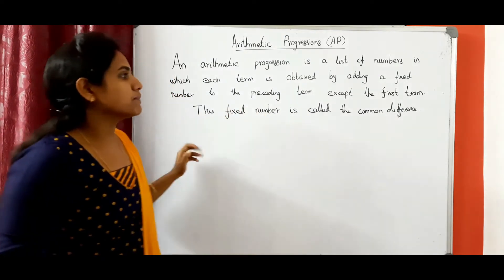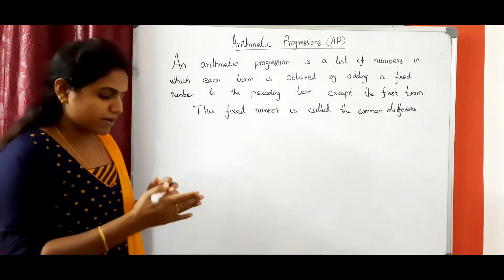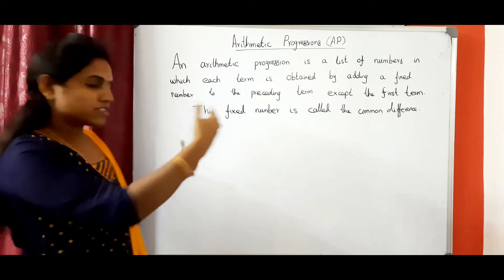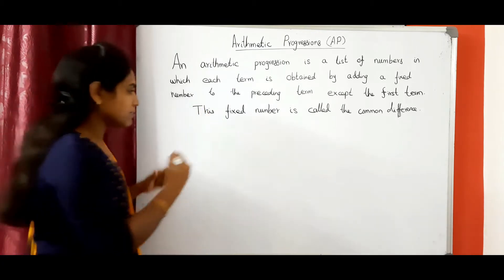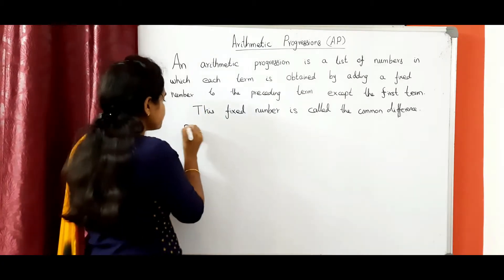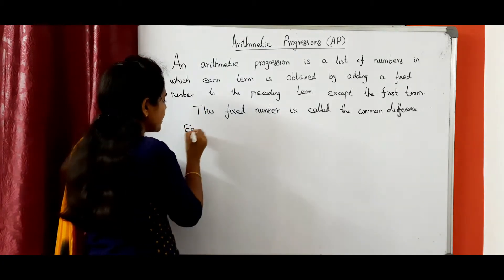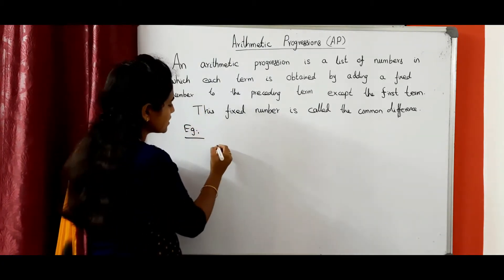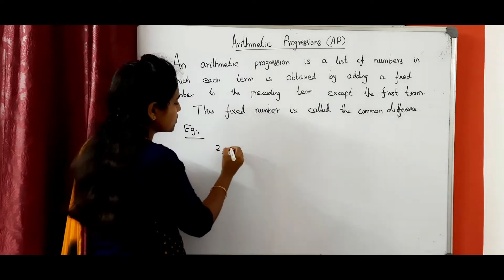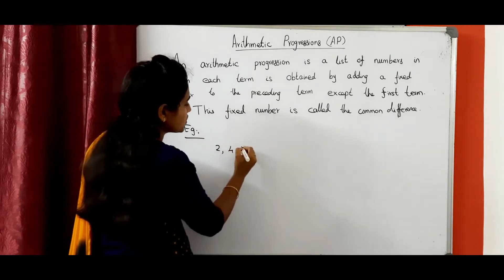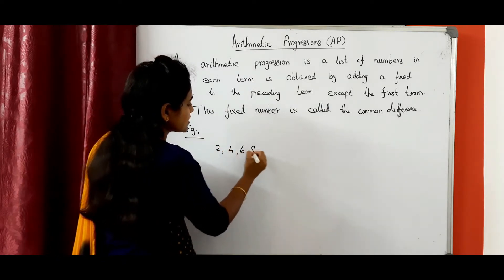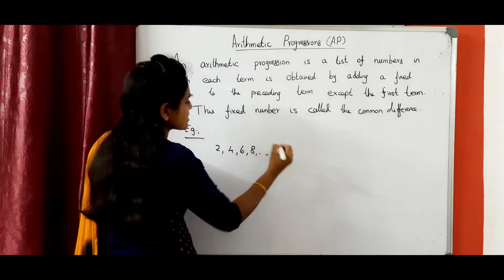This fixed number is called the common difference. I should give an example. For example, the sequence: 2, 4, 6, 8, etc.